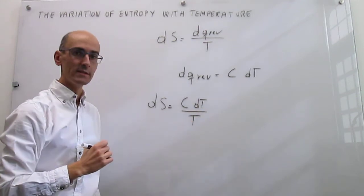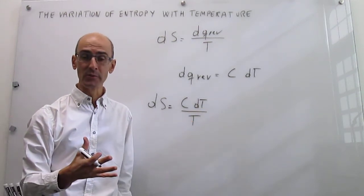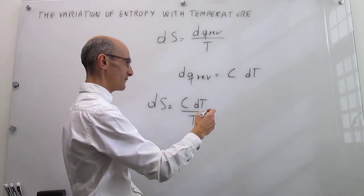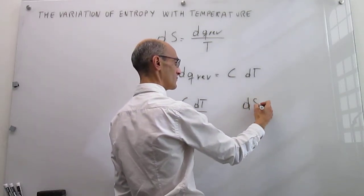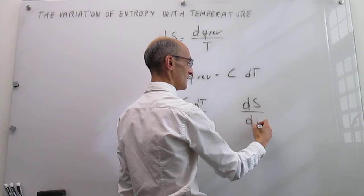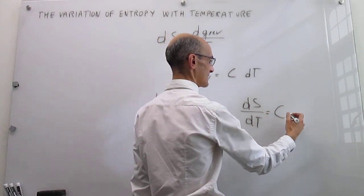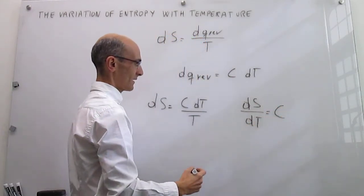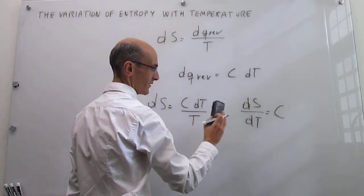To actually find out what the variation of the entropy with temperature is going to be, solving for differential of entropy over differential of T, what we have is that this is equal to the heat capacity divided over the temperature.